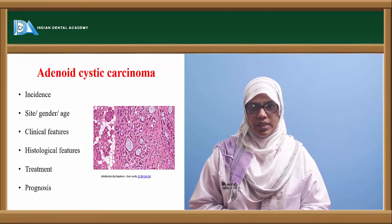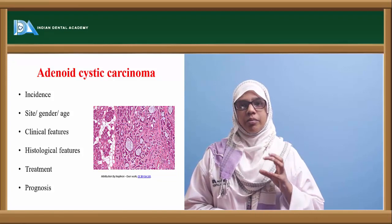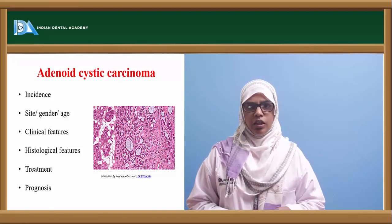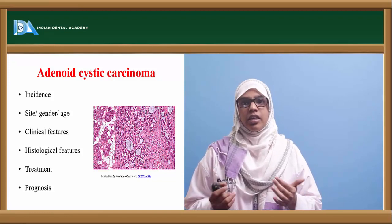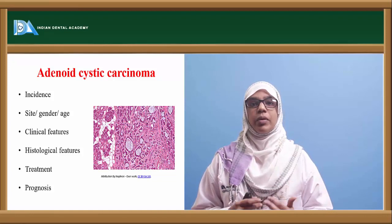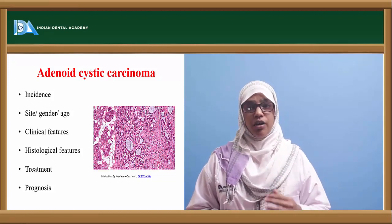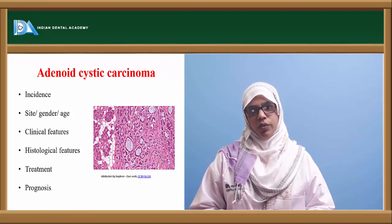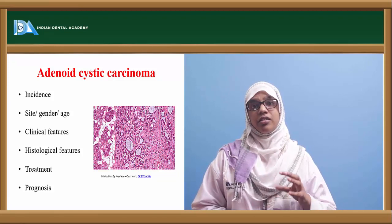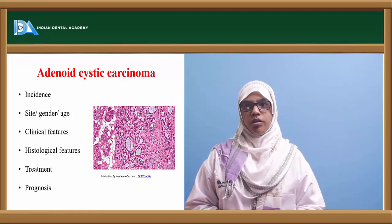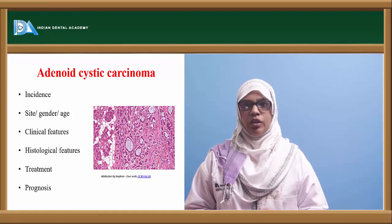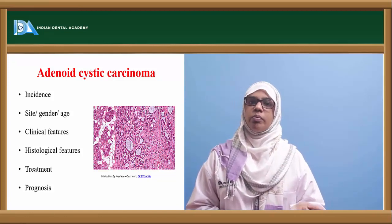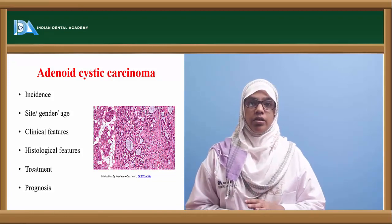Let's move on to adenoid cystic carcinoma. It is more commonly seen in the major and minor salivary glands, more commonly in the parotid and submandibular glands. It affects both males and females equally, more commonly in the middle age group. The most important clinical feature is that it has perineural spread — it spreads widely through the nerves and markedly affects the facial nerve, causing facial muscle weakness very rapidly. Treatment is radical parotidectomy, removing the nerve along with the gland. It also has chances of metastasis to lungs and long bones. Prognosis is comparatively better than mucoepidermoid carcinoma and malignant pleomorphic adenoma.